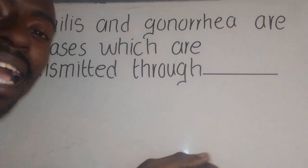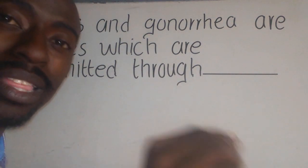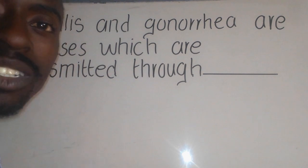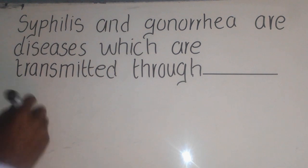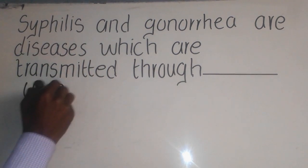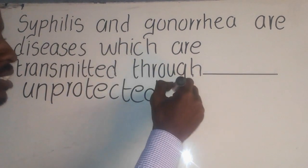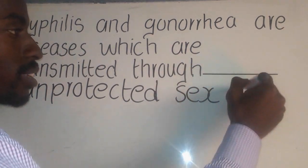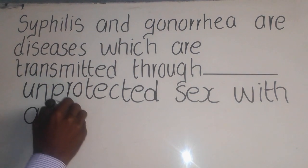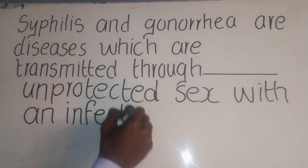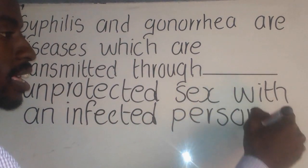These diseases can be spread when having unprotected sex with an infected person, without the use of protection such as a condom. So the answer here is: transmitted through unprotected sex with an infected person.